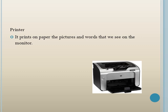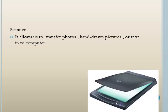The printer prints on paper the work that we have done on the computer. The printed paper is called a printout or hard copy. The scanner allows us to transfer photos, hand-drawn pictures, or text into a computer. When we want to print something, we use the printer; when we want to input images or text, we use the scanner.